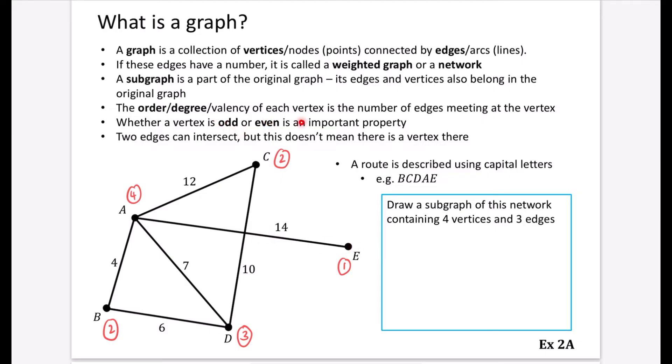Whether a vertex is odd or even is an important property. So we would say that A is even, B is even, and C is even, but D and E are odd vertices because they've got degree of one and three, whereas the rest are all even.